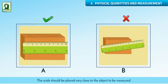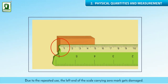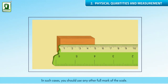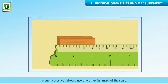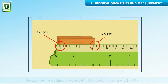The scale should be placed very close to the object to be measured. When the zero mark of the scale is damaged due to repeated use, the left end of the scale carrying the zero mark gets damaged. So, in order to measure the length of the object, we do not start from the zero mark. In such cases, you should use any other full mark of the scale, then subtract the reading of that full mark from the reading at the other end. For example, the reading at one end is 1.0 cm and at the other end is 5.5 cm. Therefore, the length of the object is 5.5 minus 1.0, which equals 4.5 cm.